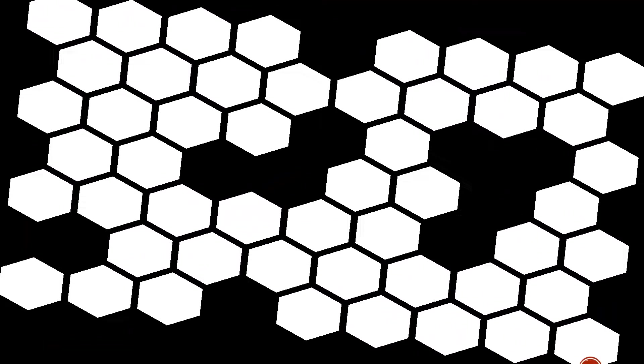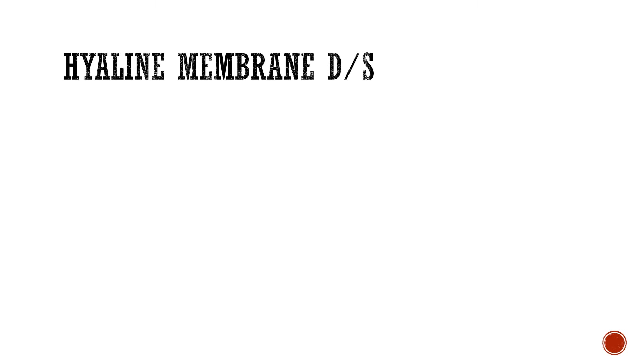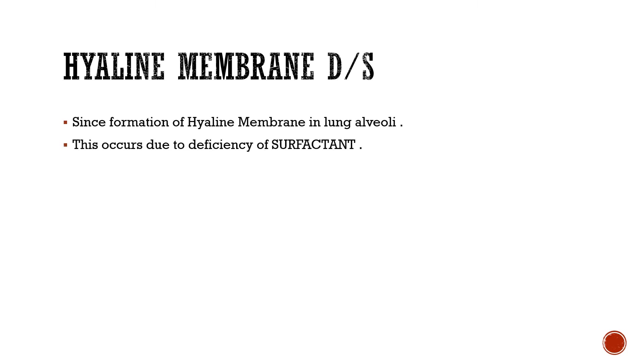Let's start with HMD, also known as hyaline membrane disease. It is called so because of the formation of hyaline membrane in and around the lung alveoli. This occurs due to the deficiency of surfactant.